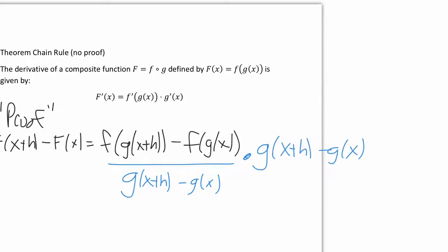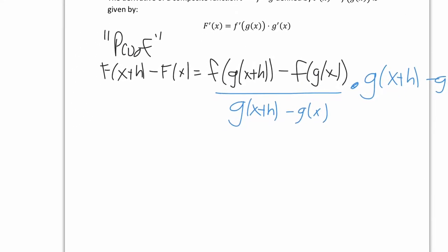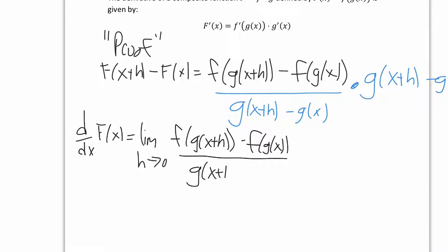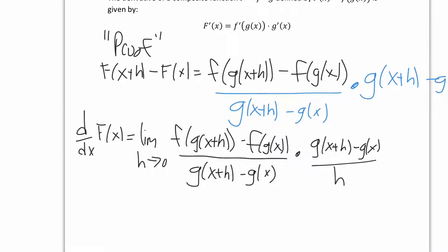From there we can start to see what's going on. If we begin to make a limit, we're going to have two different pieces combined with multiplication. So let's go ahead and find the actual derivative. We'll get the derivative of capital F of x equals the limit as h approaches 0 of f of g of x plus h minus f of g of x over g of x plus h minus g of x, times g of x plus h minus g of x over h.